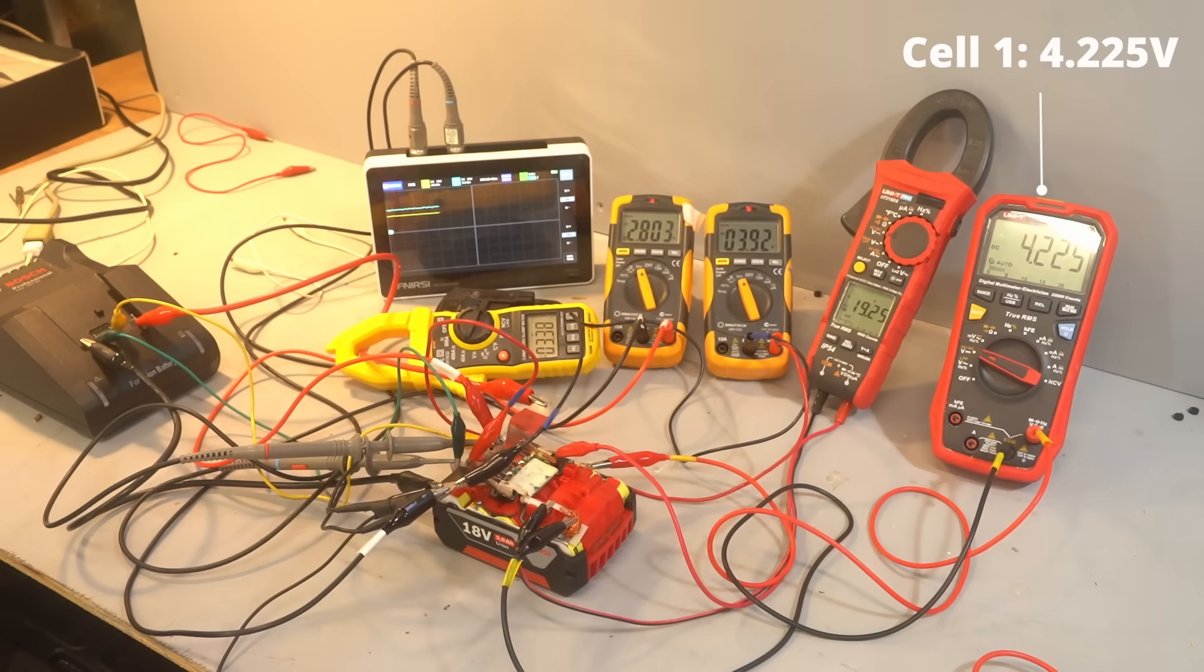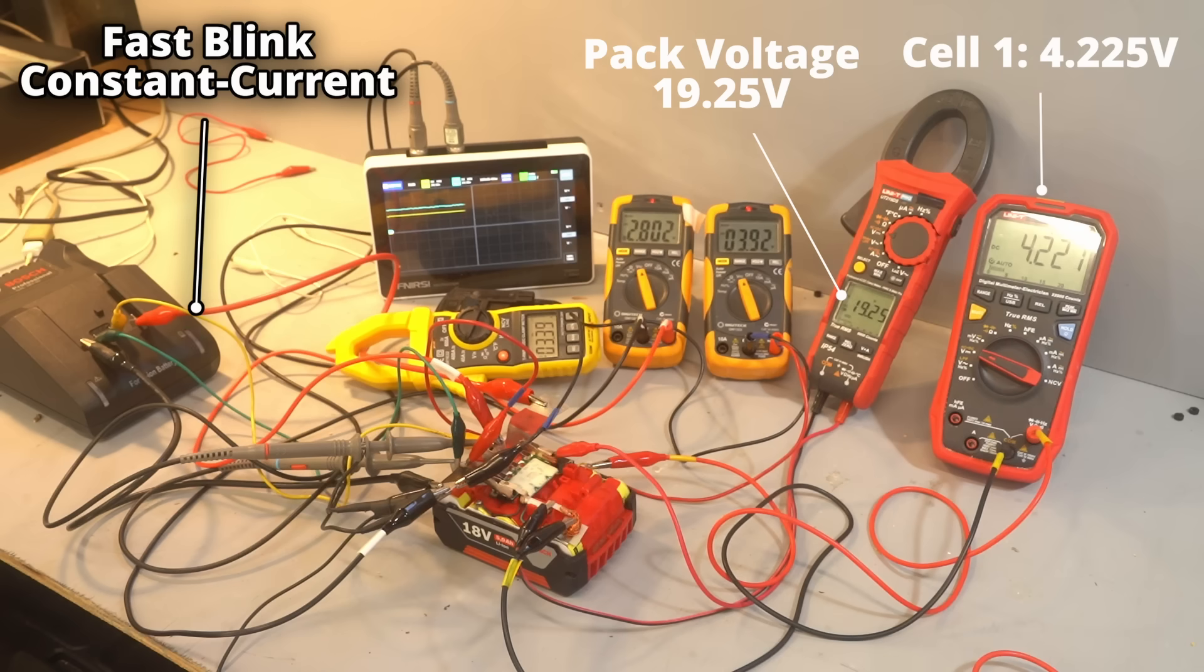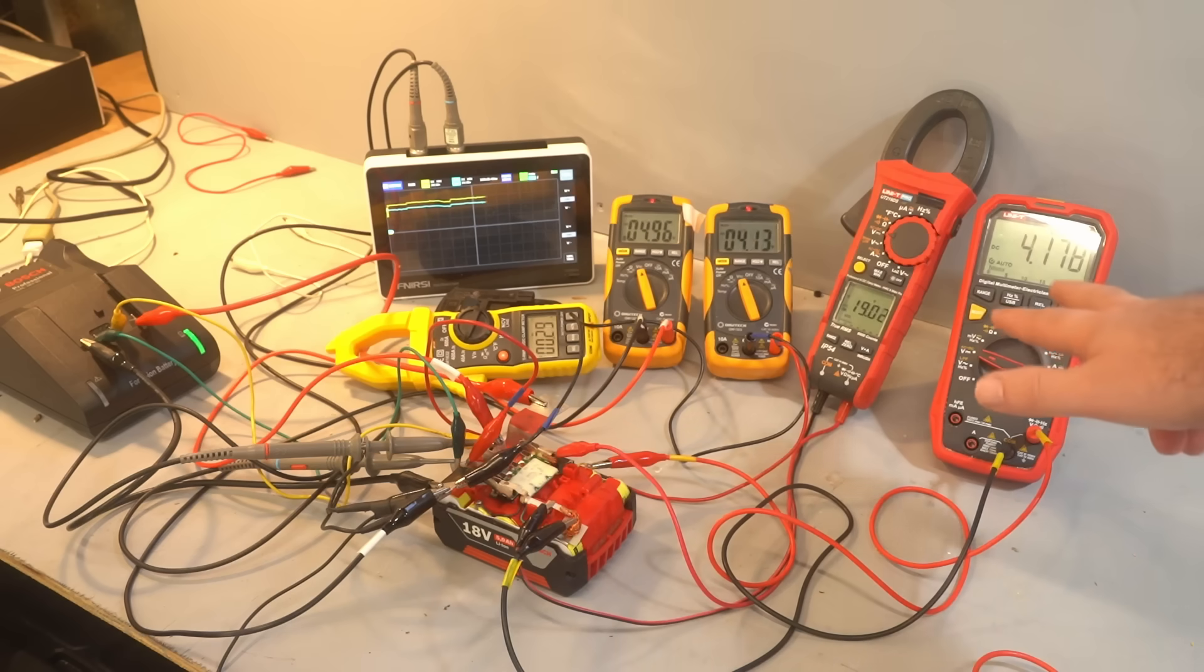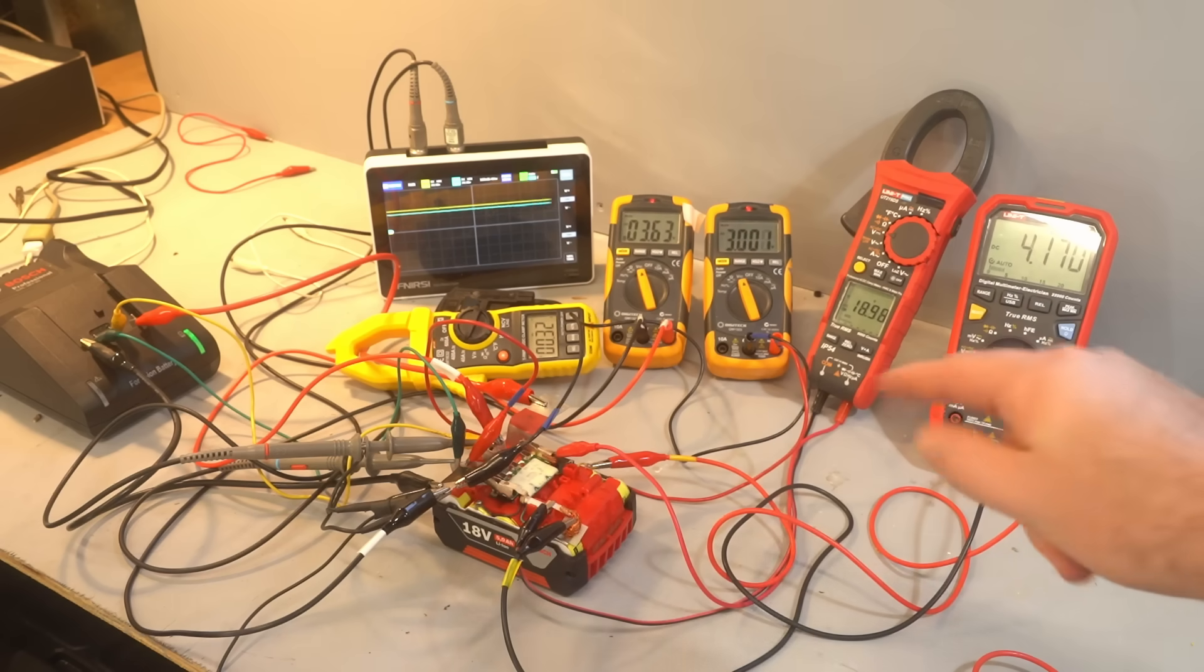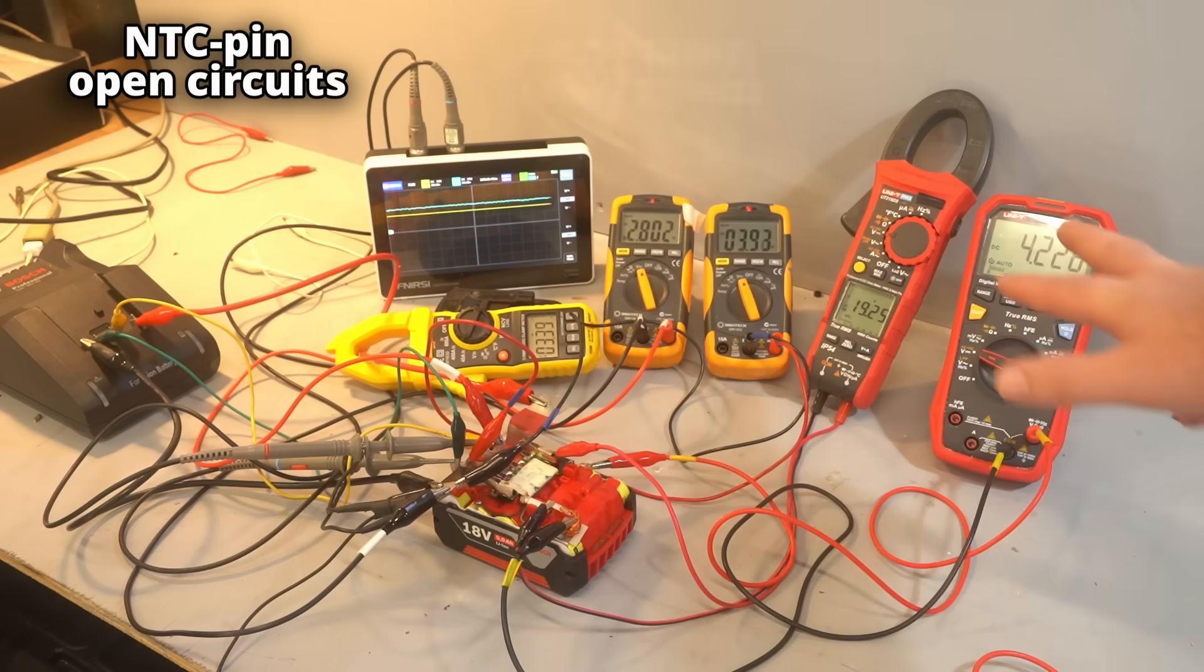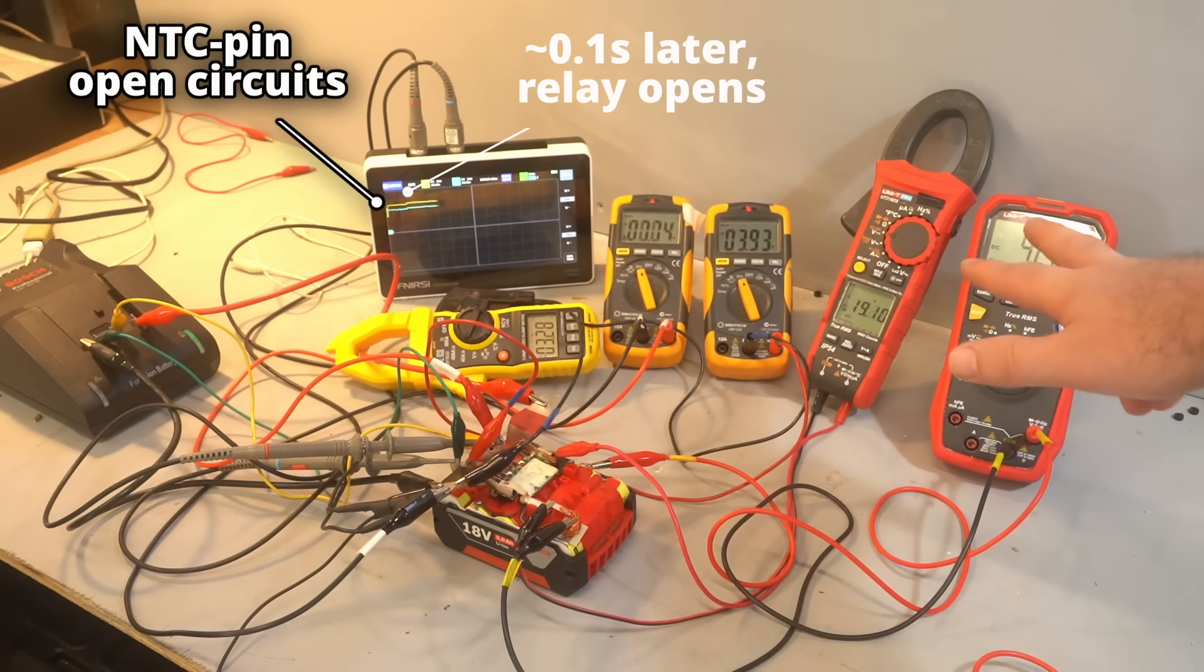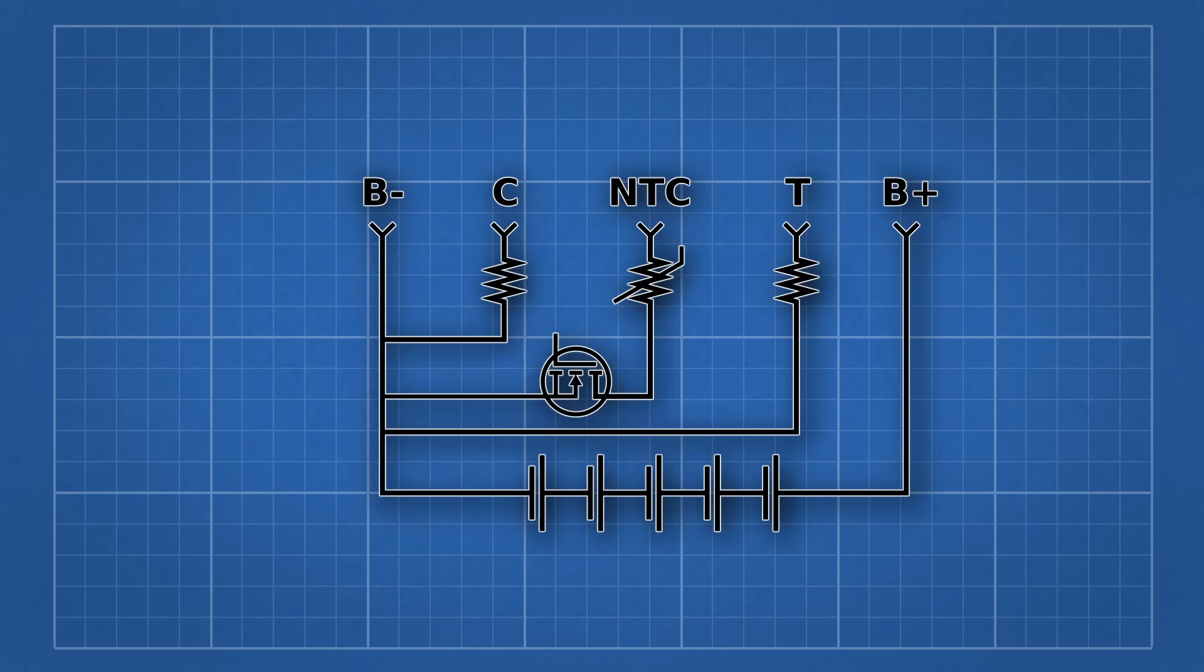Whilst Bosch does not do individual cell monitoring in discharge, they fortunately do have it during charging. If any cell goes above 4.225V, then the battery open circuits the NTC and the charger stops. So they definitely have a transistor on the NTC circuit that can be used to signal the charger or tool to shut off. It's a bit disappointing that they don't make use of this when on the tool.